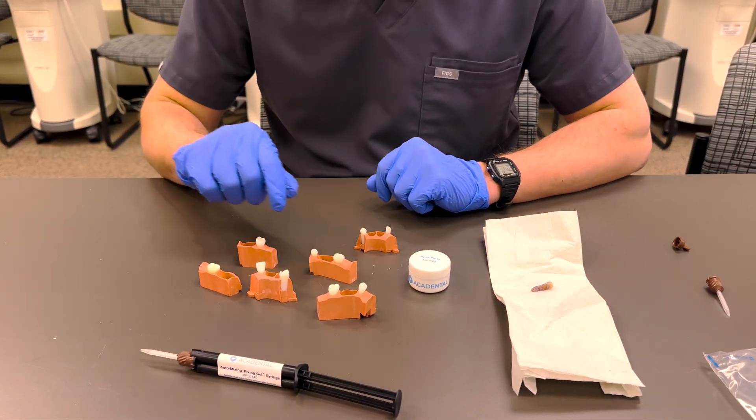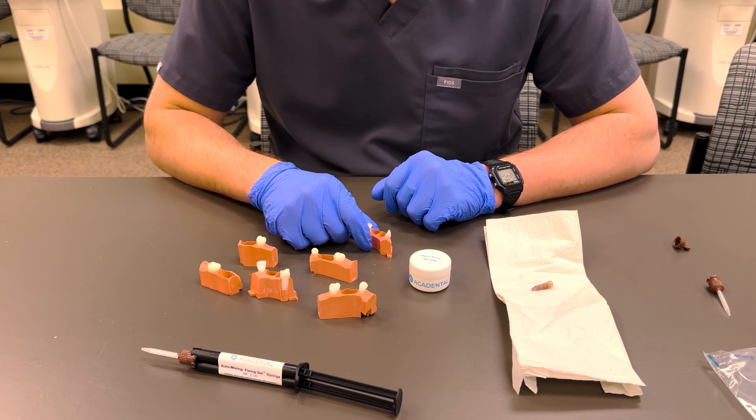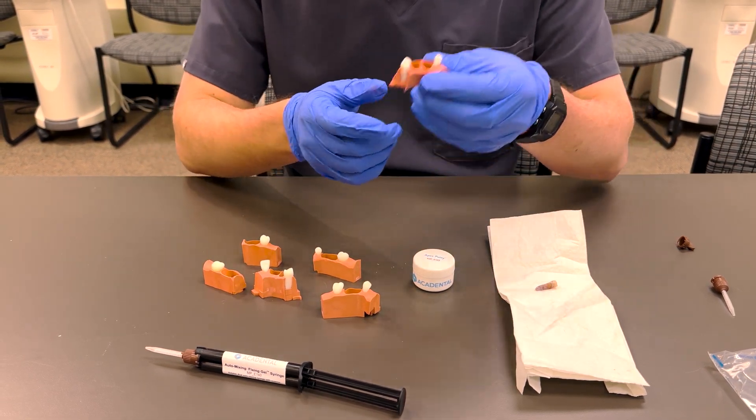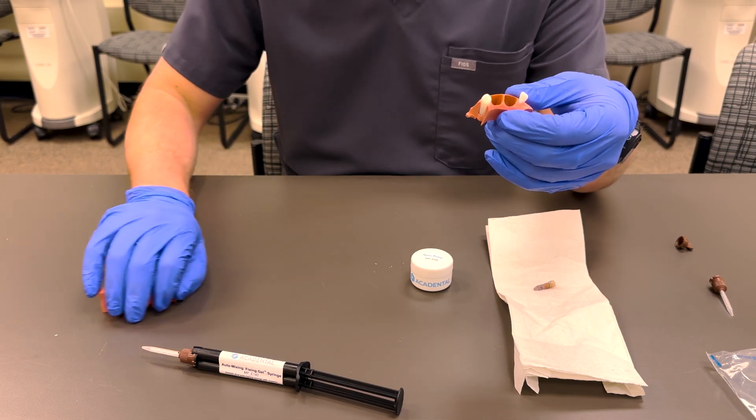What you're going to do is first choose which sextant you're going to be using. It's whichever one matches the tooth you're doing, which in this case is this one because we're doing a mandibular premolar.